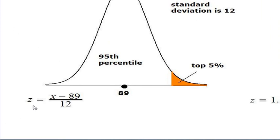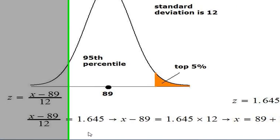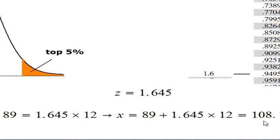You know, Z and X are related by this rule. Z has to be X minus the mean over the standard deviation in this case. So what we do is set this quotient equal to 1.645 and go with the equation solving procedure.